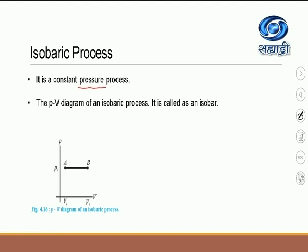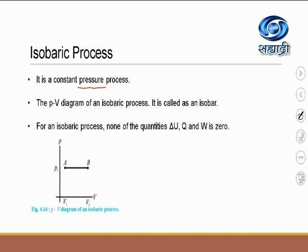Do you know where we use isobars? The meteorological department prints graphs called isobars, which indicate locations of places at which the pressure is constant. For an isobaric process, none of the quantities delta U, Q, and W is equal to zero. Let us study the isobaric process in detail.